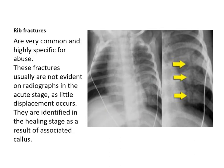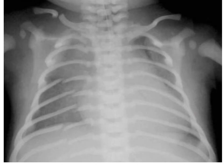Rib fractures are very common and highly specific for abuse. This fracture is usually not evident on radiograph early; we see it in the healing stage when callus is formed. Multiple rib fractures in the healing stage with callus formation are seen mainly posterolateral — especially posterior — which is the most specific for child abuse. When a parent gets angry and hits the child on the back, the fracture occurs posteriorly, not anteriorly or laterally. Accidental fractures usually occur laterally or anteriorly.